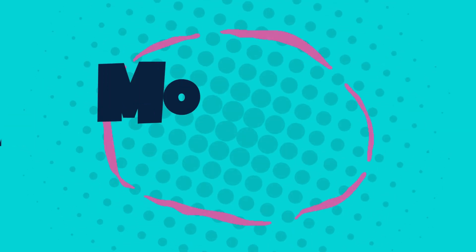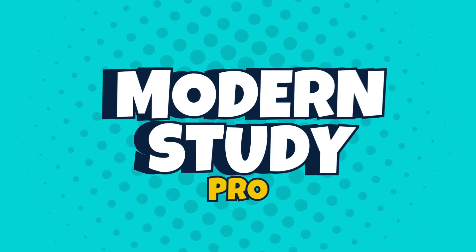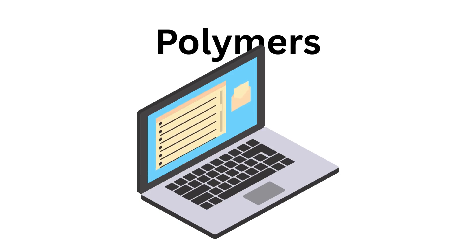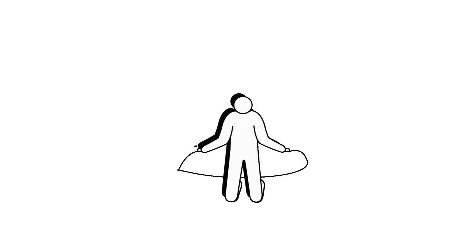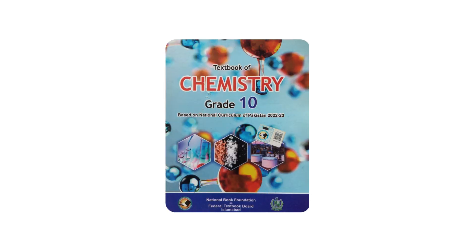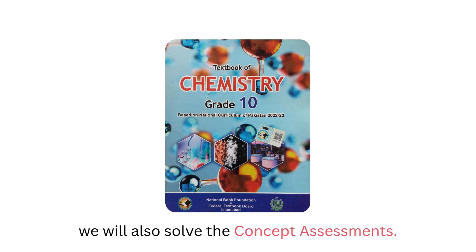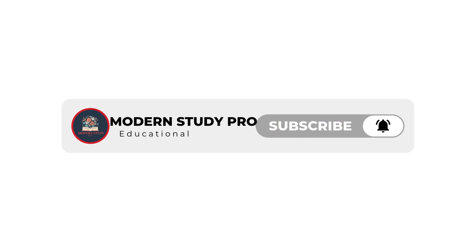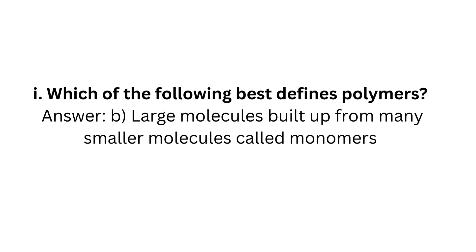Welcome to Modern Study Pro. In this video, we're going to solve the exercise of Chapter 12, Polymers, from your chemistry book. Timestamps for each question are given in the description box, so you can easily jump to any part you want. After this, just one last chapter will be left from the entire book, and once we complete it, we will also solve the concept assessments. So make sure to subscribe to Modern Study Pro and stay connected.